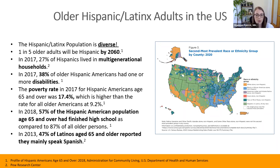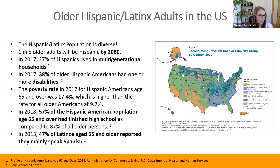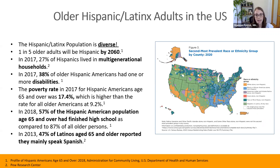About a quarter of Hispanics live in multi-generational households — grandparents, parents, and grandchildren all under one roof. More than one-third of older Hispanic adults have more than one disability. Hispanic older adults are more likely to live in poverty than other older Americans, and we see lower educational attainment in this population, with about half mainly speaking Spanish. By 2060, one in five older adults will be Hispanic, so planning ahead and ensuring inclusive services now will benefit us down the road.